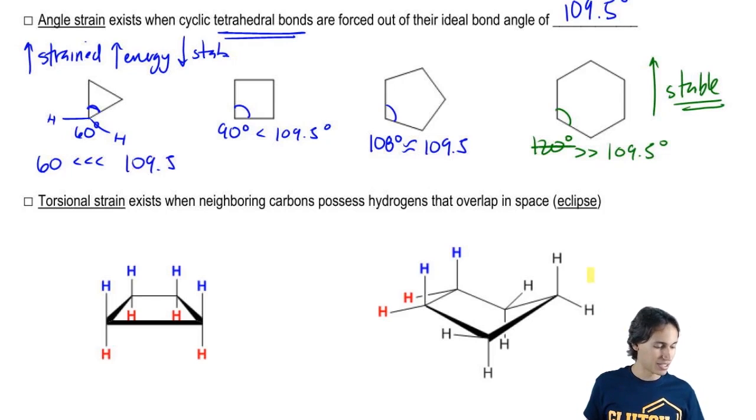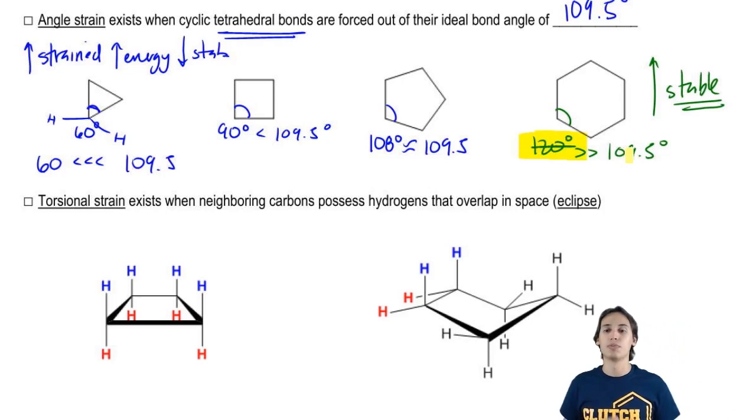Why is that, if the bond angle is so off, if it's 120, then why would it be the most stable? And we're going to learn that in a little bit.